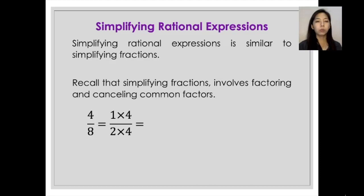Let's say, for example, if we have the given 4 over 8, factor this out into 4 becomes 1 times 4 and 8 becomes 2 times 4, wherein their common factor is 4, so cancel that out, and the simplest form would be 1 half.